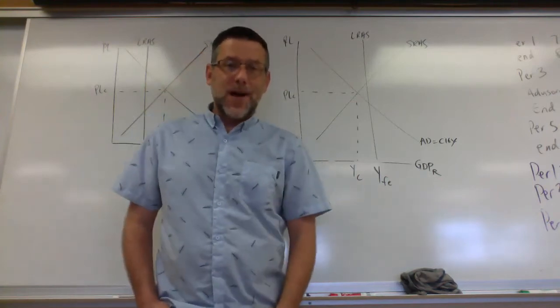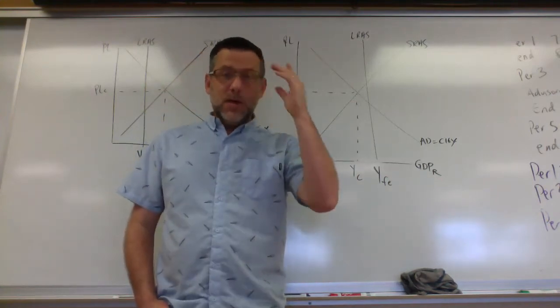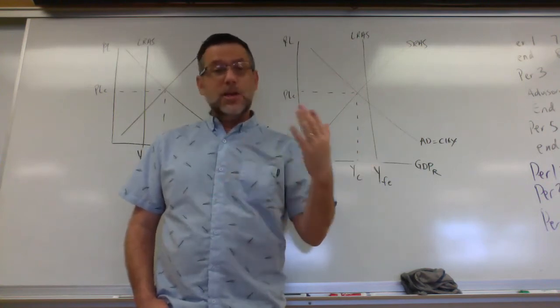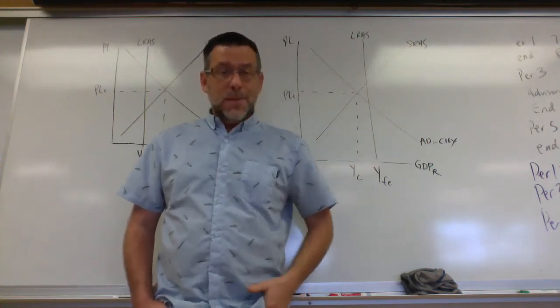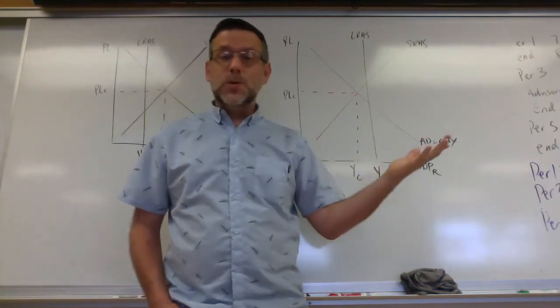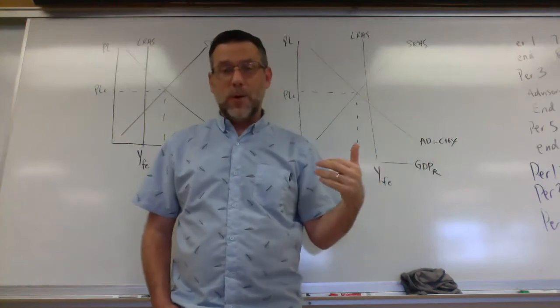Now in Unit 5, we learned that if something goes wrong, we have an inflationary or recessionary gap that should fix themselves in the long run. But that long run, that eventually fixing itself, can take a long time. The Great Depression went on for a decade.